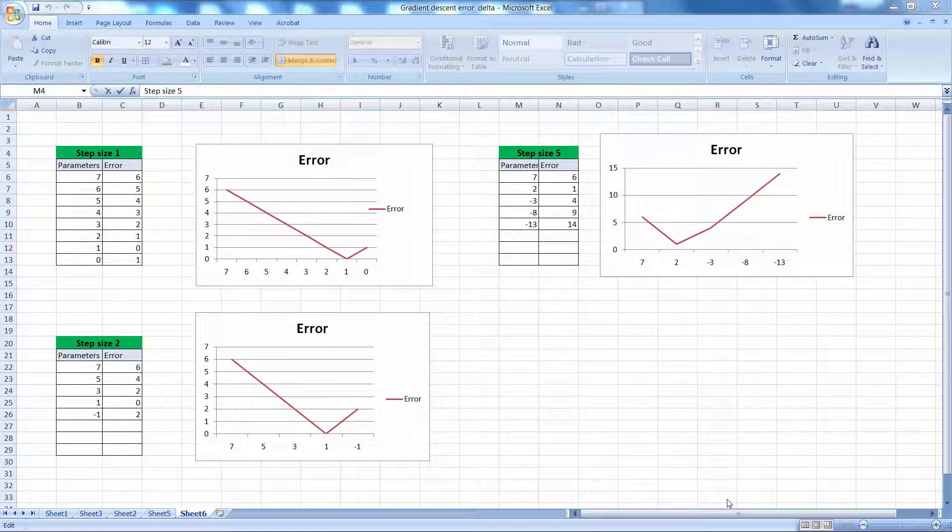Something to consider: if the step size is 1, in this case it goes linearly from 7, 6, 5 all the way to 0. You see that the error also gradually reduces to 0.